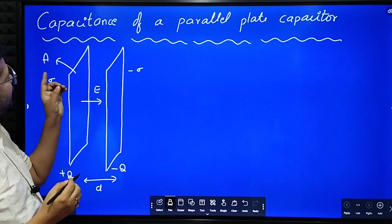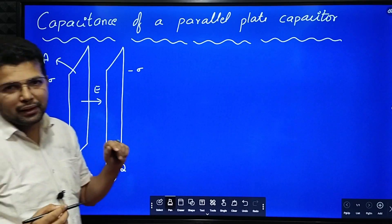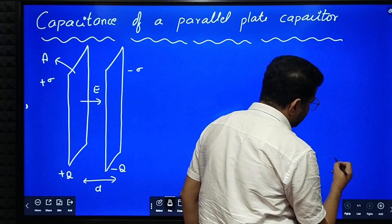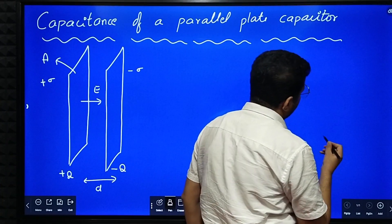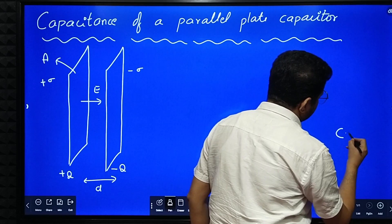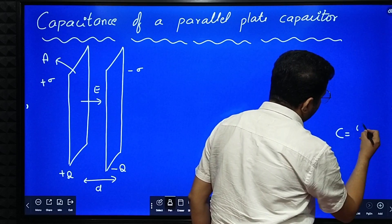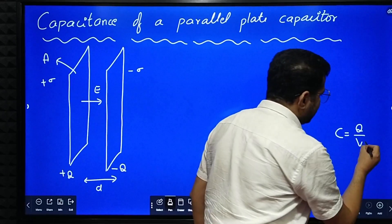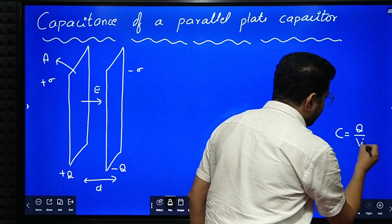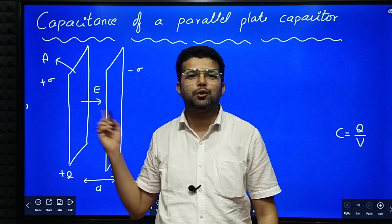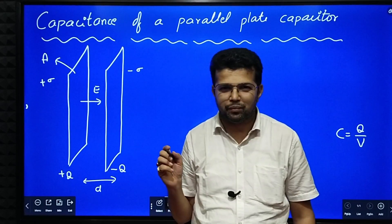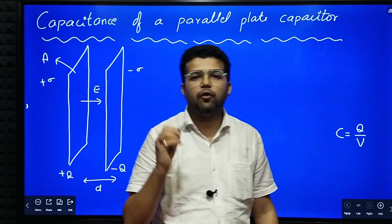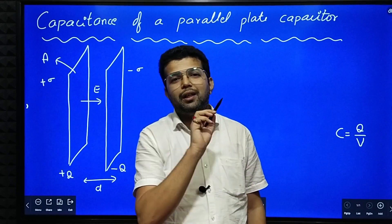Now we have to derive the expression for capacitance. According to definition, capacitance is equal to Q by V. So that means we have to find the potential difference between those two plates. For potential difference, V is equal to E into d.